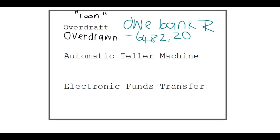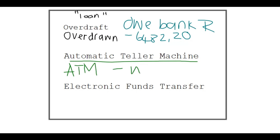An automatic teller machine is just the full name for the abbreviation ATM — this is where you withdraw cash, like a mini bank.